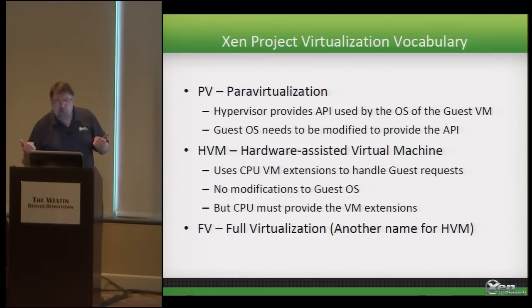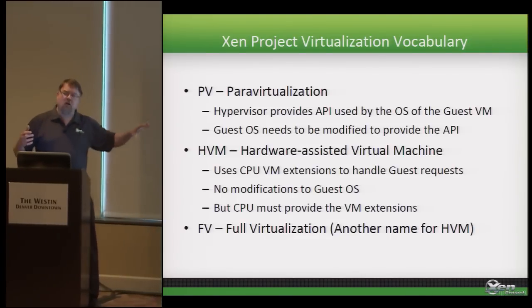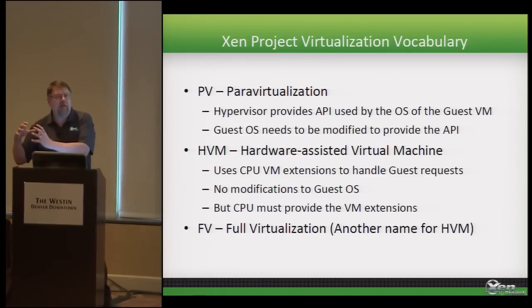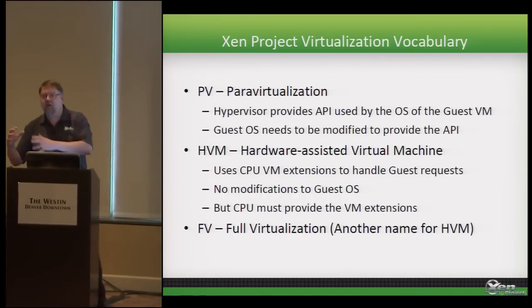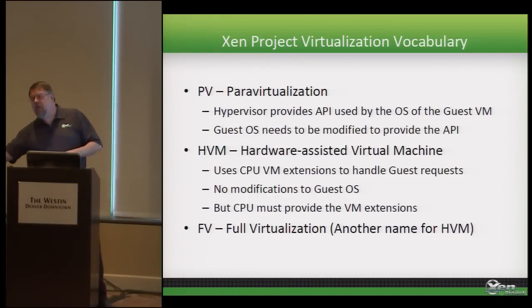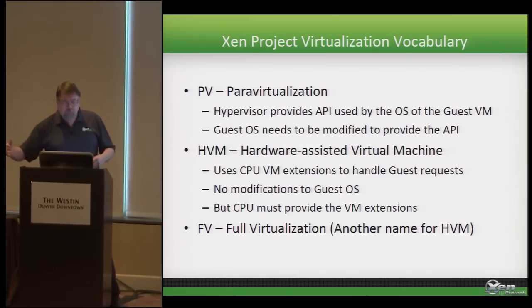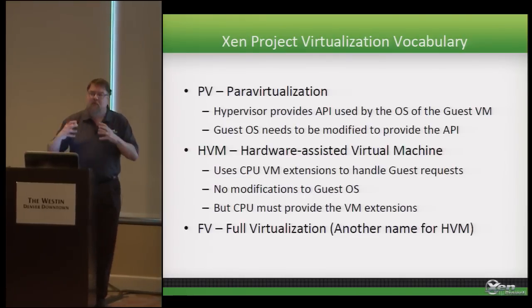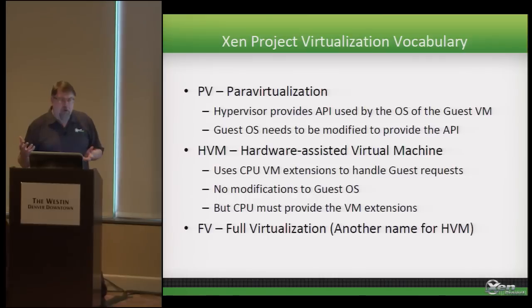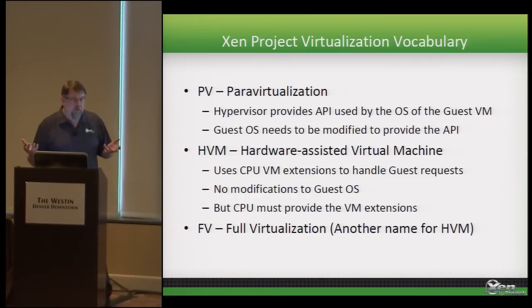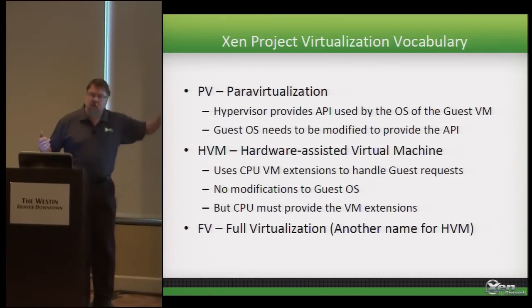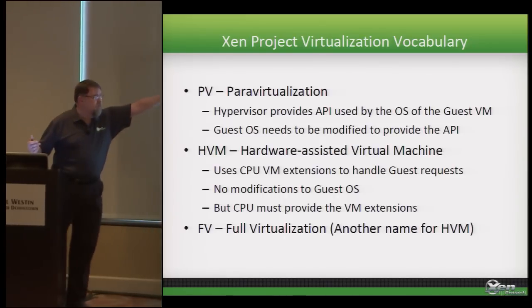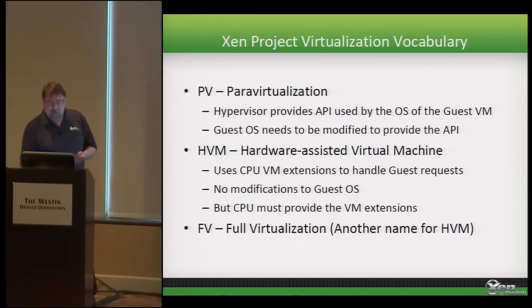Para-virtualization was something Xen Project pioneered in its infancy — rather than replicating hardware, we open a big pipe for data. If you want to throw something on the network, you just throw it down the pipe without formatting it for hardware that doesn't exist. Para-virtualization was really neat except the guest OS had to be aware of it. That's great for Linux and the BSDs, not so good for Windows. So for Windows we hardware virtualize; for other things we para-virtualize and get better performance.